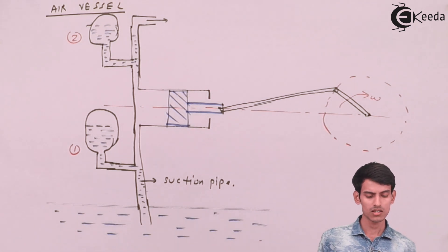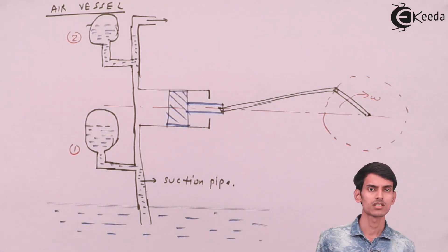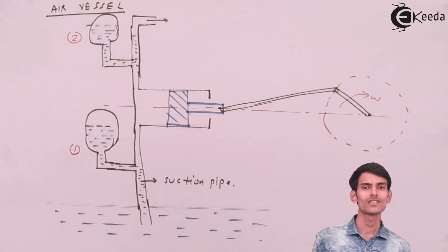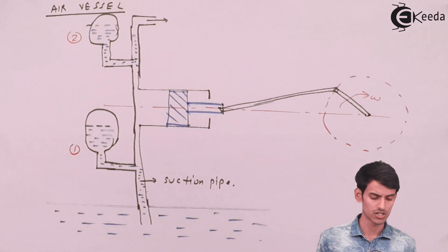Now in case again some pressure fluctuation takes place, some pressure reduces, the compressed air now pushes the water from the air vessel. The water goes and maintains the fluctuation of pressure.